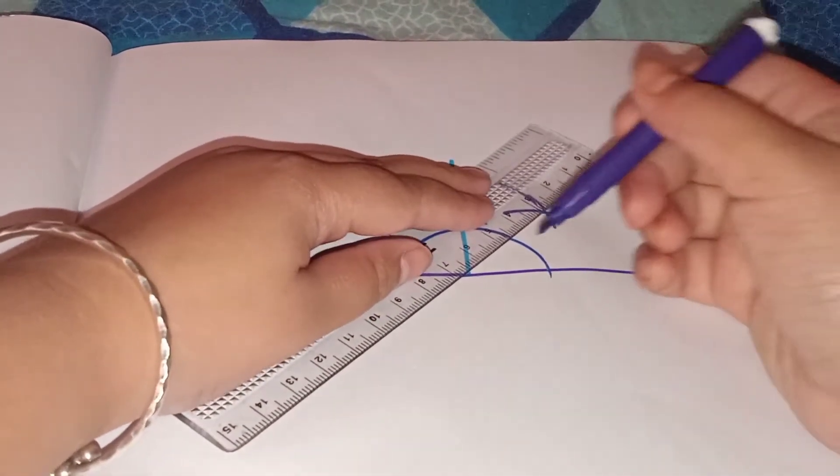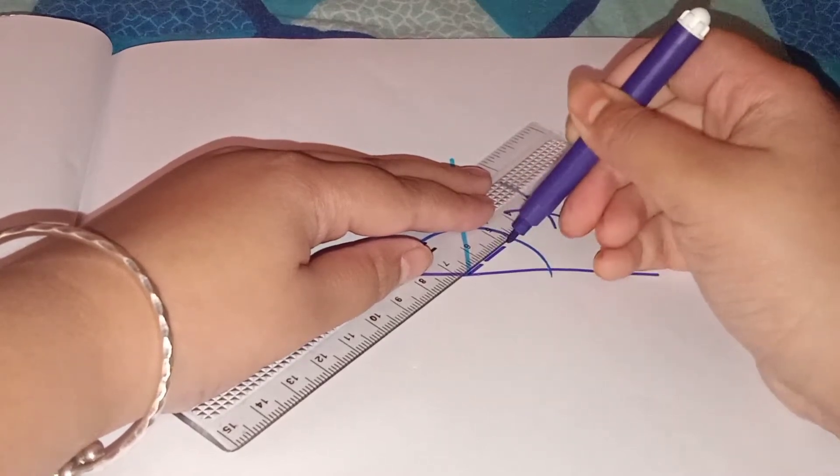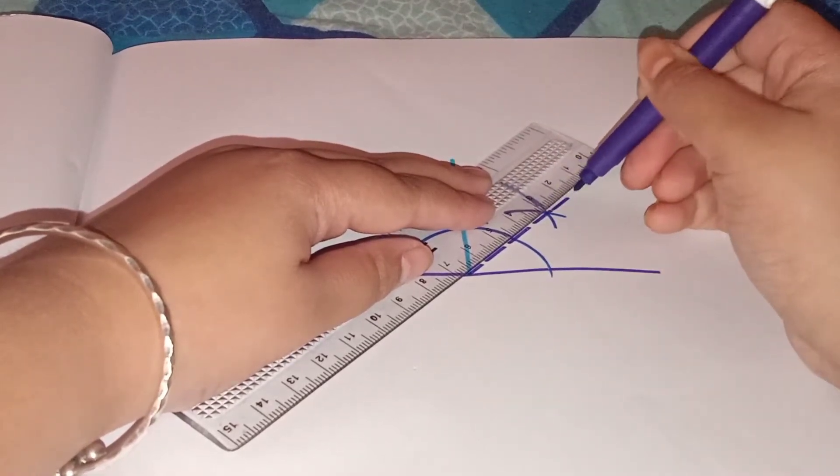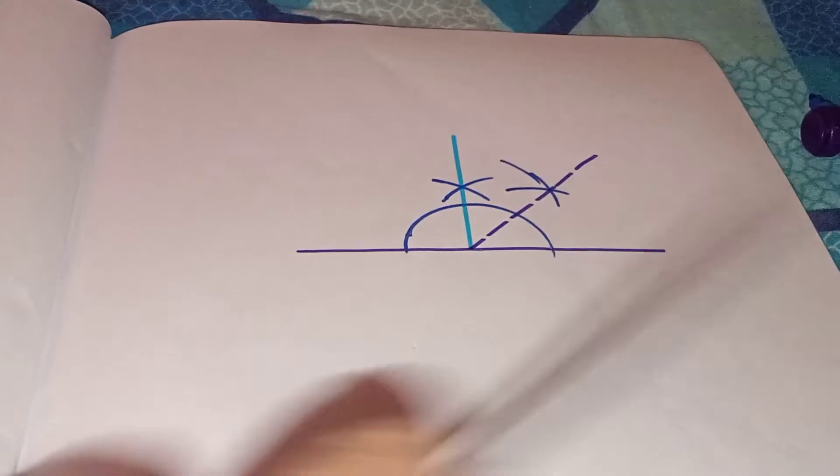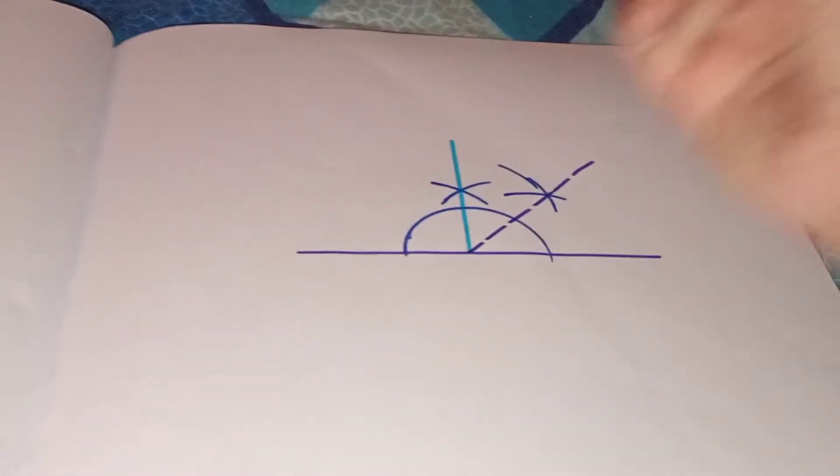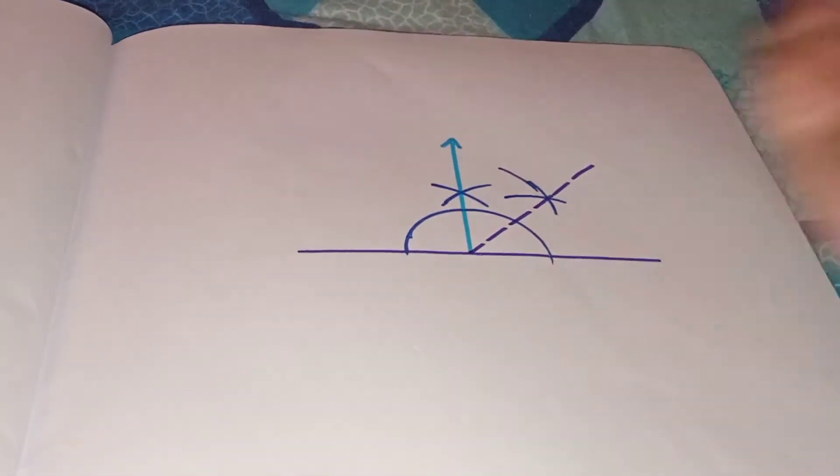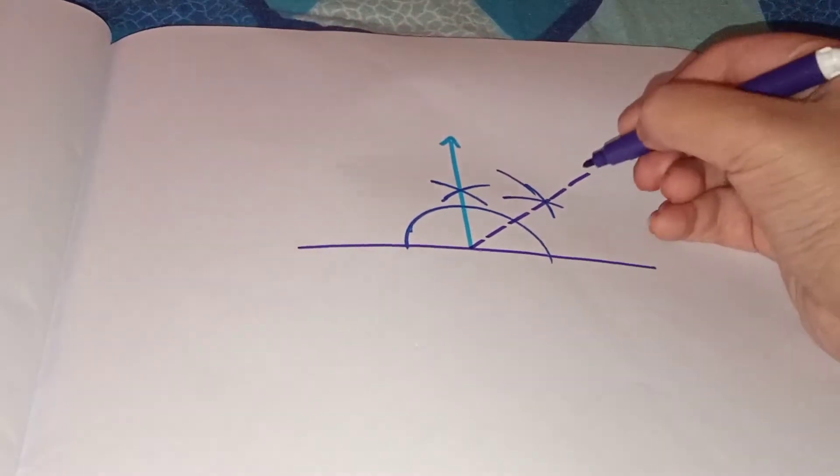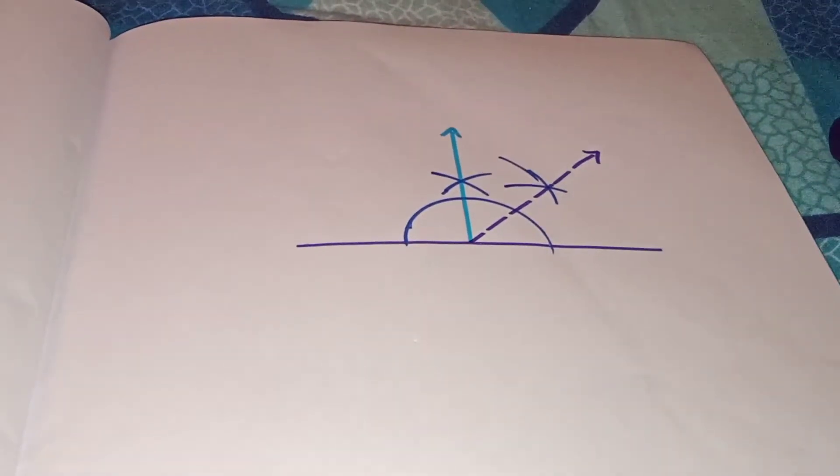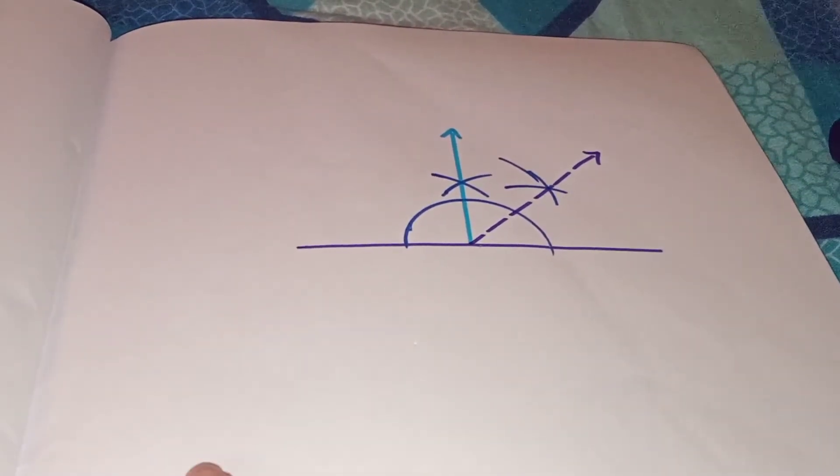The arc should be perfect here. I messed up a little bit in here, but yours should be perfect. Now take your pencil and draw a line like this.